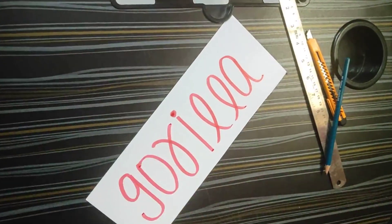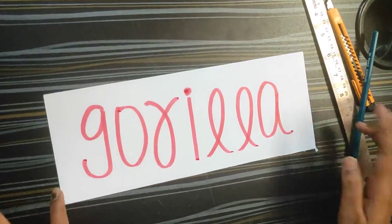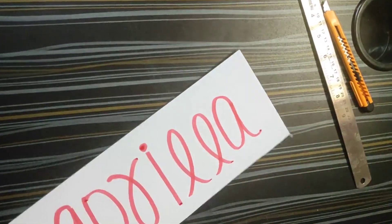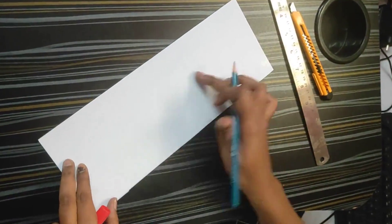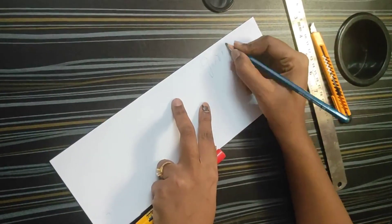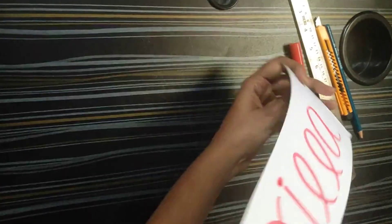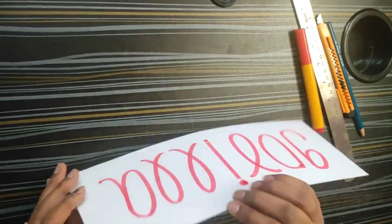When you use a chisel tip marker, the words will be bold enough and you don't need to keep writing on top of it. In case if you are using a normal marker, the font will be very thin. So when you make the flashcards, make sure to write the same word at the back of the card so that when you flash the words, you will know what word you are flashing.